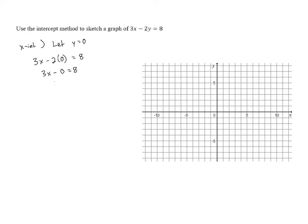3x minus 0 is just 3x, so we have 3x equals 8, and to get x alone, we divide by 3. So we have x equals 8 thirds. You can use a calculator to figure out what that is as a decimal. You should get 2.666 repeating.